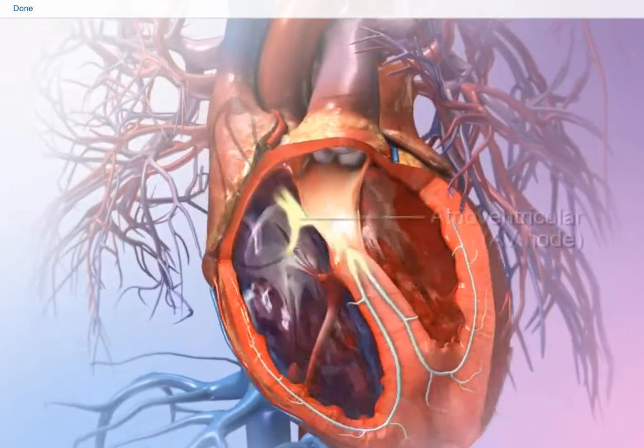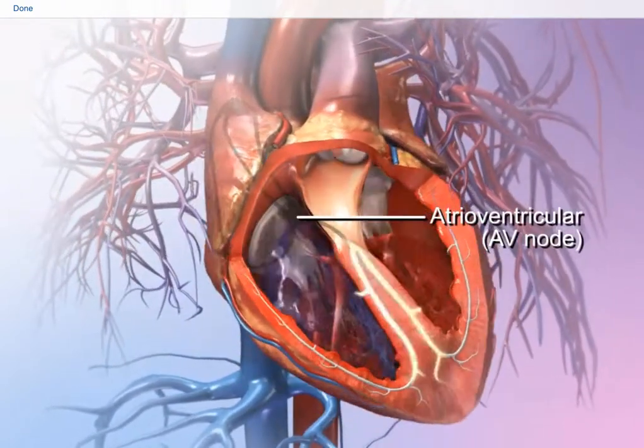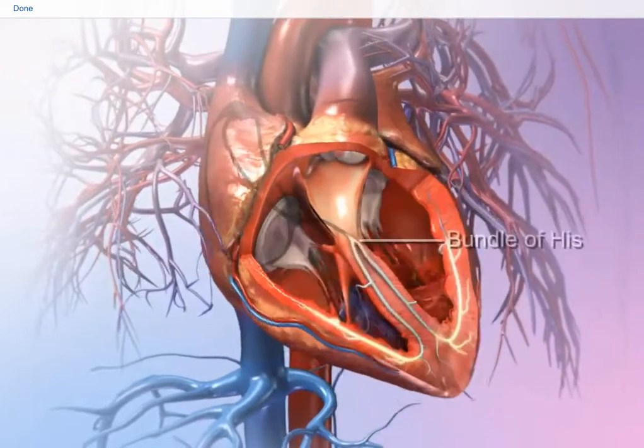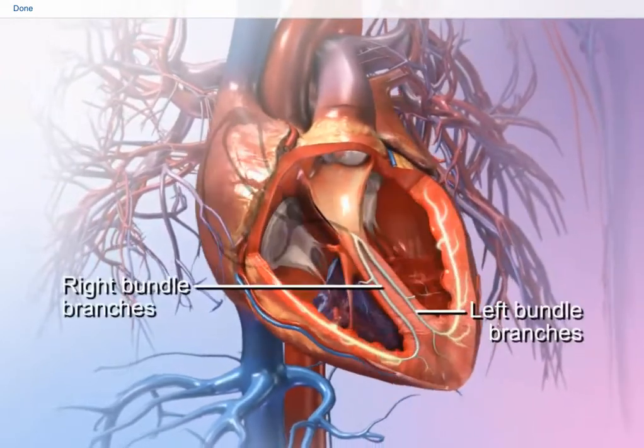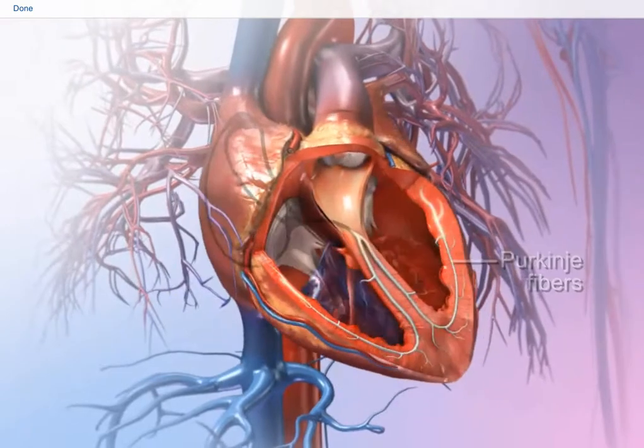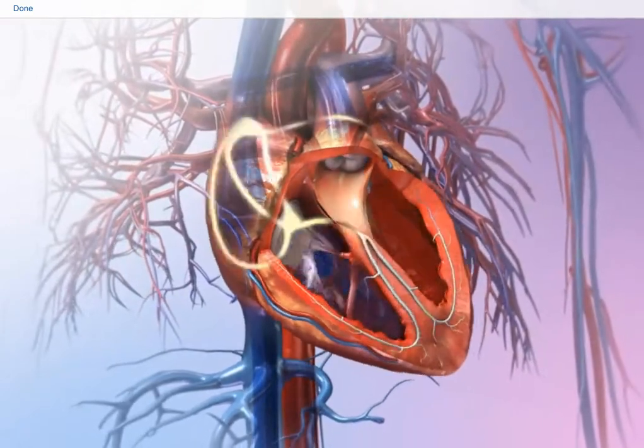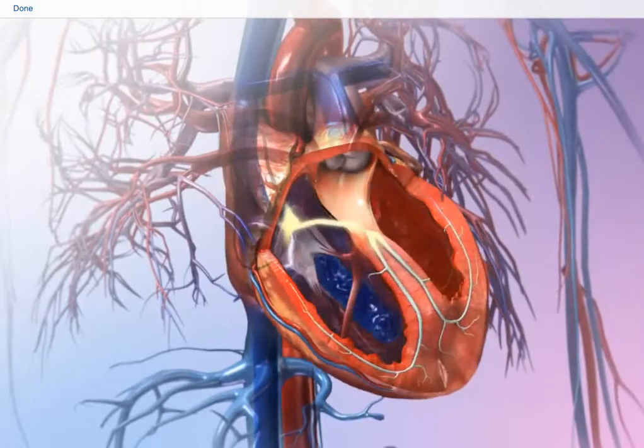Next, the impulse travels to the atrioventricular or AV node. It passes through the bundle of Hiss, the bundle branches, and the Purkinje fibers. As the impulse reaches the ventricles, it triggers a contraction there and the heart ejects blood.